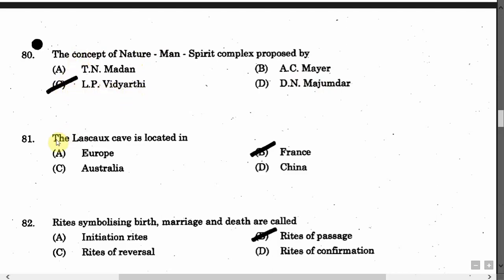The next question is: The Lascaux cave is located in — Option A: Europe. Option B: France. Option C: Australia. Option D: China. The correct answer is Option B, that is France.